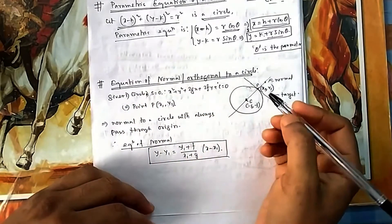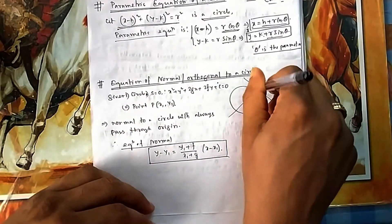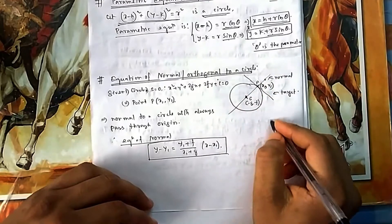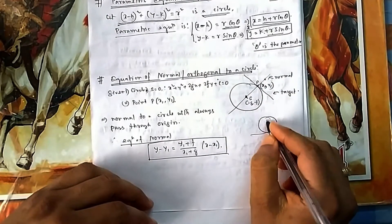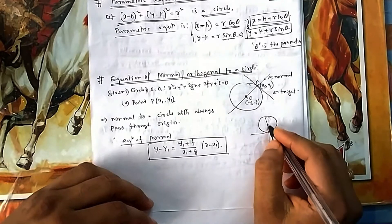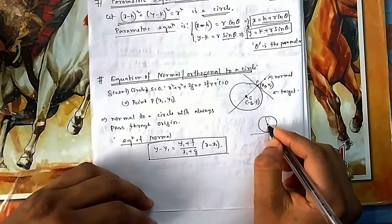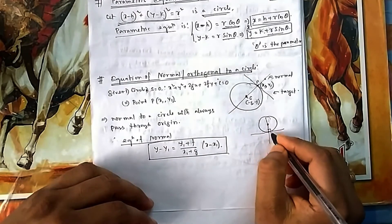Next, to find the equation of a normal or orthogonal to a circle: suppose you have a circle and the point is given, you need to find the normal. What is normal? If you find a tangent at this point, 90 degrees to that tangent is the normal.